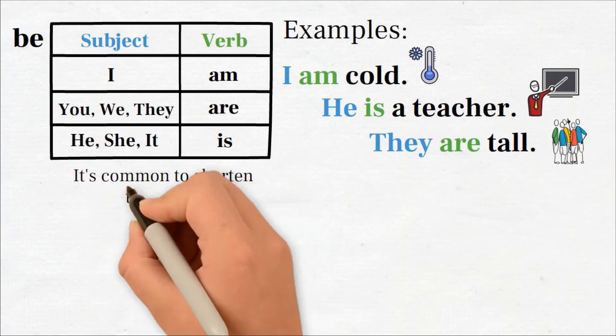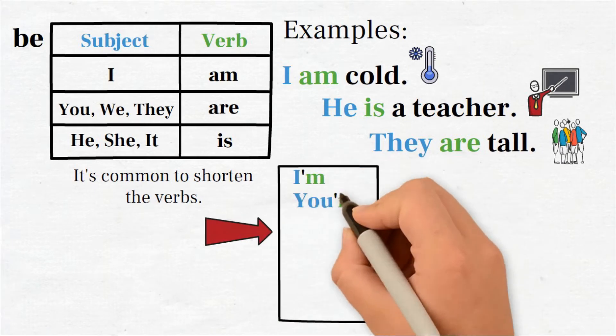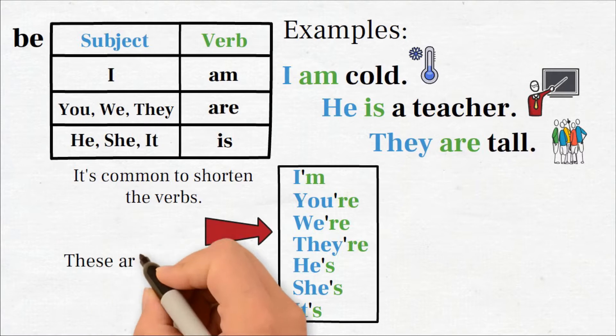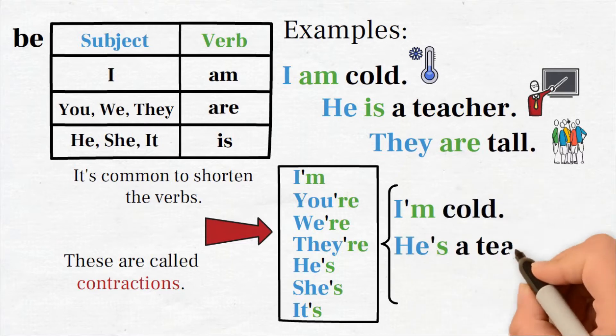It's also common to shorten the verbs like this: I am becomes I'm, you are becomes you're, we are becomes we're, they are becomes they're, she is becomes she's, it is becomes it's. These are called contractions. So our examples would be: I'm cold, he's a teacher, they're tall.